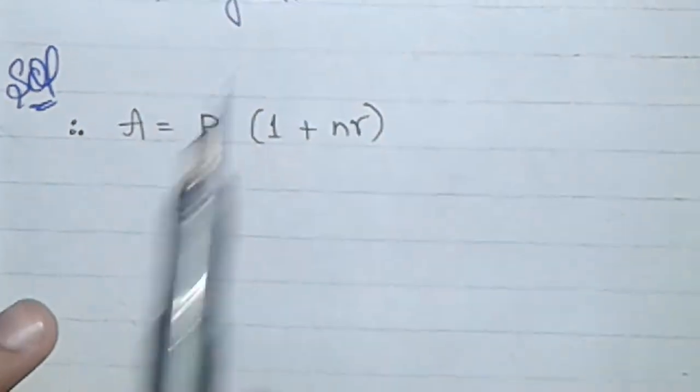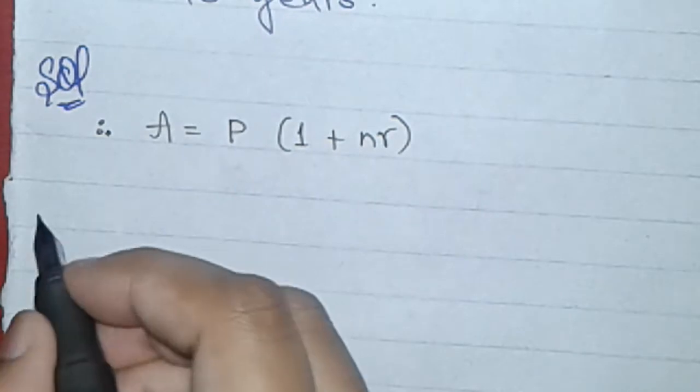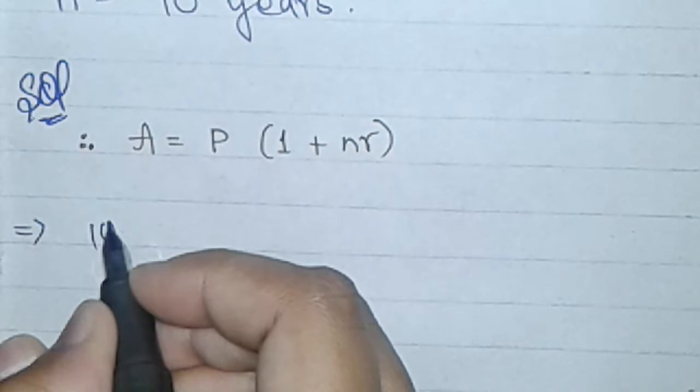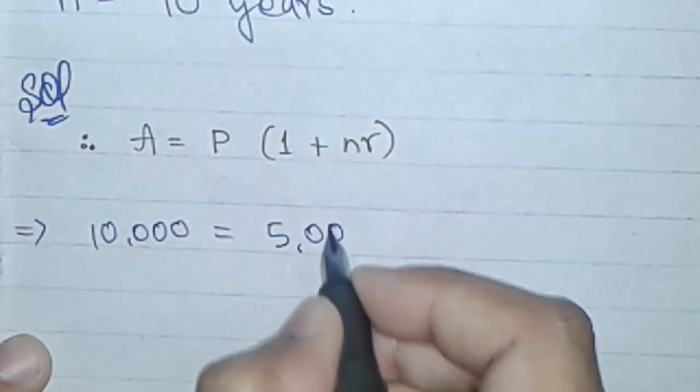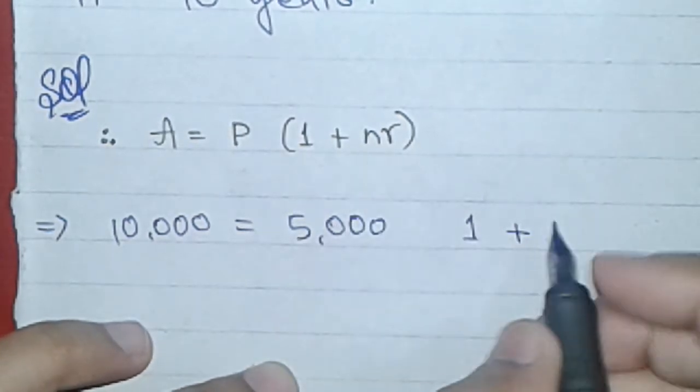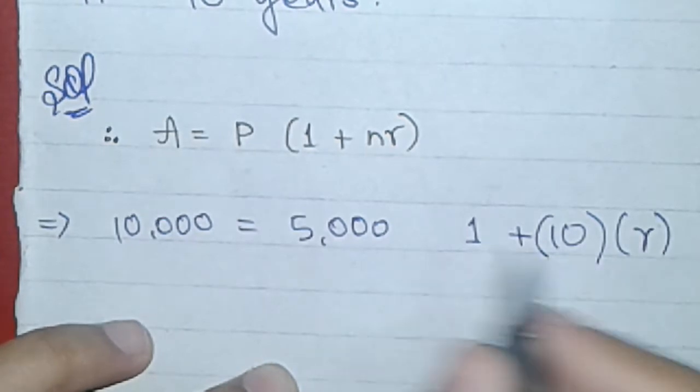So this is total amount formula. Simple values we will put in the formula. Here is very easy now. What is n? N given is 10 and r is not given, so we find r.